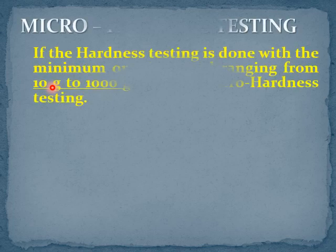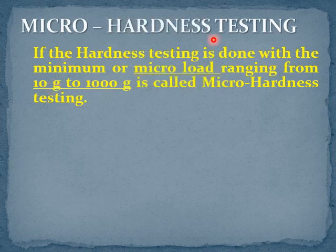In hardness testing, a heavy load ranging from 60 kg to 150 kg is used. Whereas, in micro hardness testing, a minimum micro load ranging from 10 g to 1000 g is used.